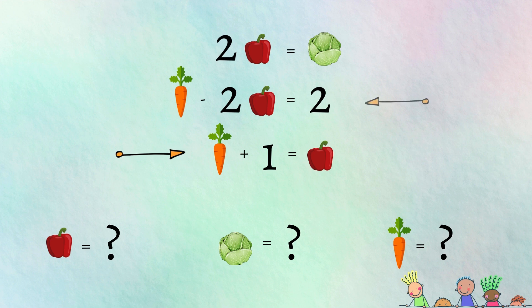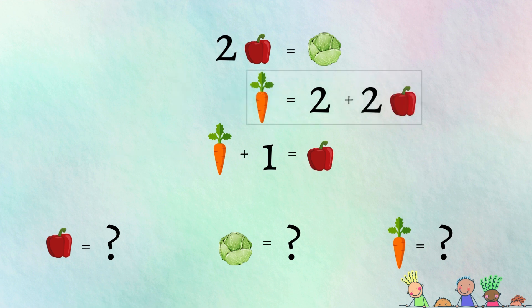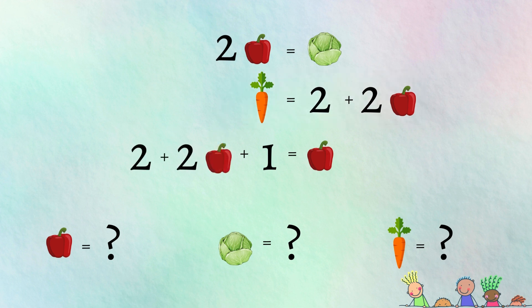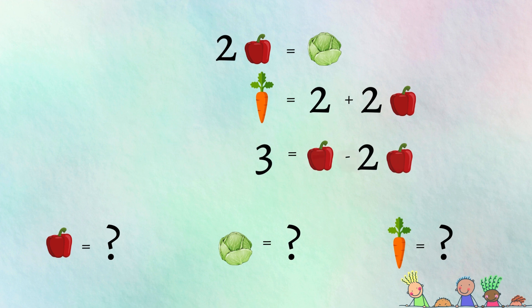All right, now the third equation gives me another relationship between the carrot and the bell pepper, so I can try to marry those two together. What I'm going to do is let's solve for the carrot in the second equation. Shift things around and the carrot is equal to two plus two bell peppers. Plug the carrot into the third equation and we've got two plus two bell peppers plus one equals one bell pepper.